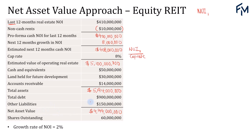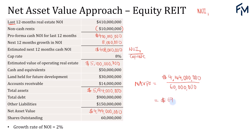Now we have the net asset value of 4.144 billion dollars. Dividing by 60 million shares outstanding gives us a net asset value per share of $69.07. We then compare this with the REIT's share price to determine whether there is a potential undervaluation or potential overvaluation.